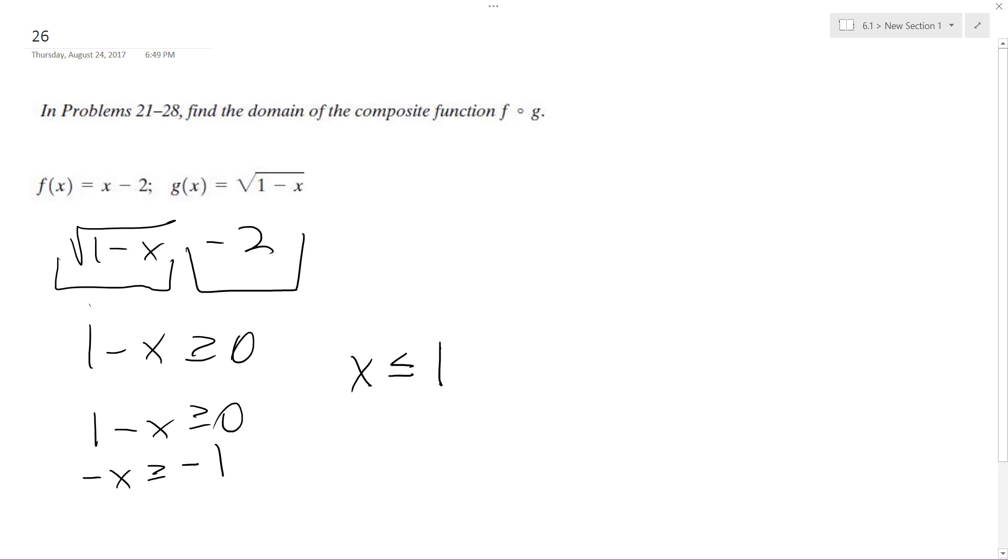So if it's 1, 1 minus 1 equals 0. If it's 0, 1 minus 0, because 0 is less than 1. Or if it's like negative 1, then it becomes 2. So that's what works out. So x is anything less than or equal to 1.